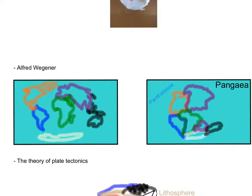Despite all his findings, Wegener's continental drift theory was not taken seriously until the 1950s and 60s, when the theory of plate tectonics was slowly developed. The theory of plate tectonics explains why Wegener's continental drift theory was accurate after all. It states that Earth's crust is made up of moving sections or plates, which are constantly being powered by thermal convection currents created by Earth's mantle.